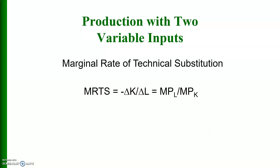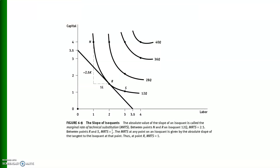We define the marginal rate of technical substitution, which is the rate at which one input is substituted for another, equal to the ratio of marginal product of labor to marginal product of capital. In this diagram, there are four isoquants and an isocost line. The slope of the isocost equals the slope of the isoquant at point R, giving the optimal combination of inputs that produces the maximum output of 12Q for a given level of expenditure.